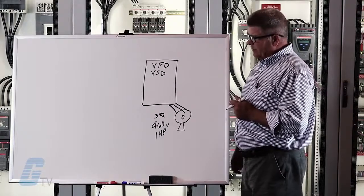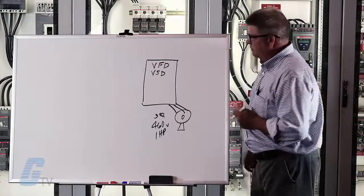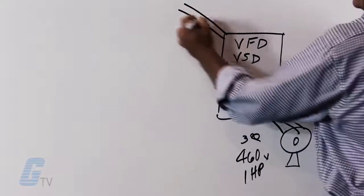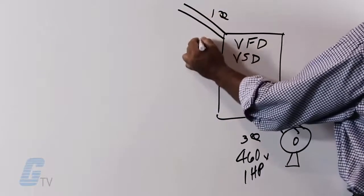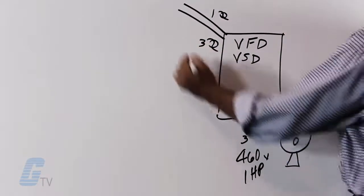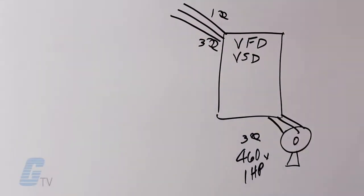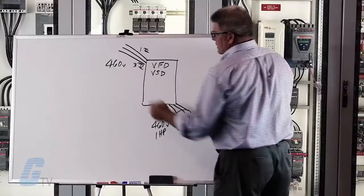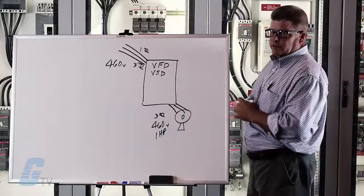Next thing you need to think about is what your supply voltage is to run this particular drive. Variable frequency drives can be run off single phase or three phase. In our case today we are going to run it off 460 volts three phase. That is what our customer has available in his particular building.